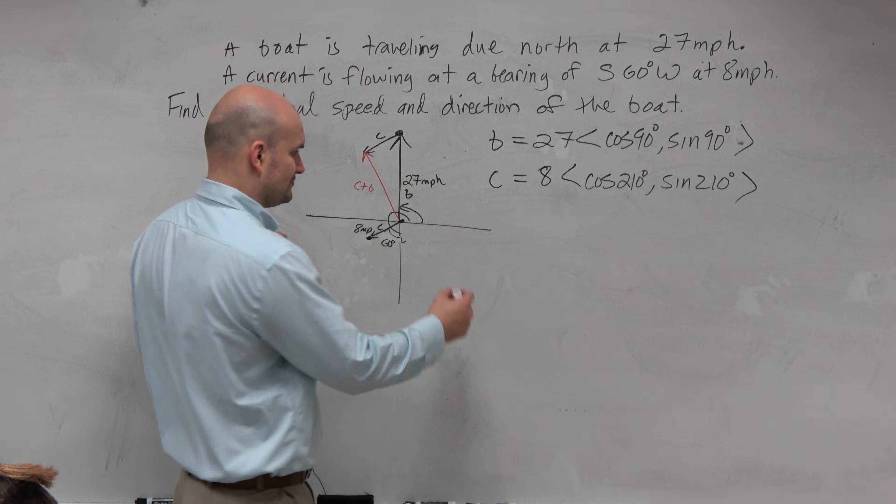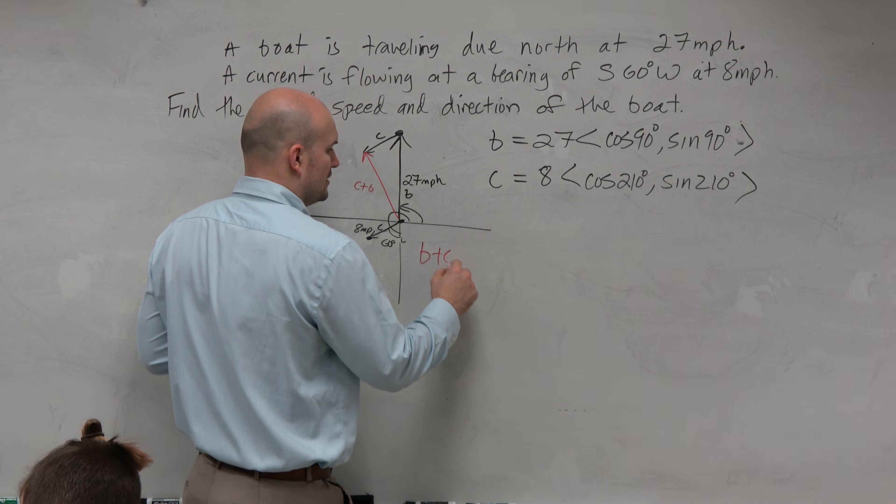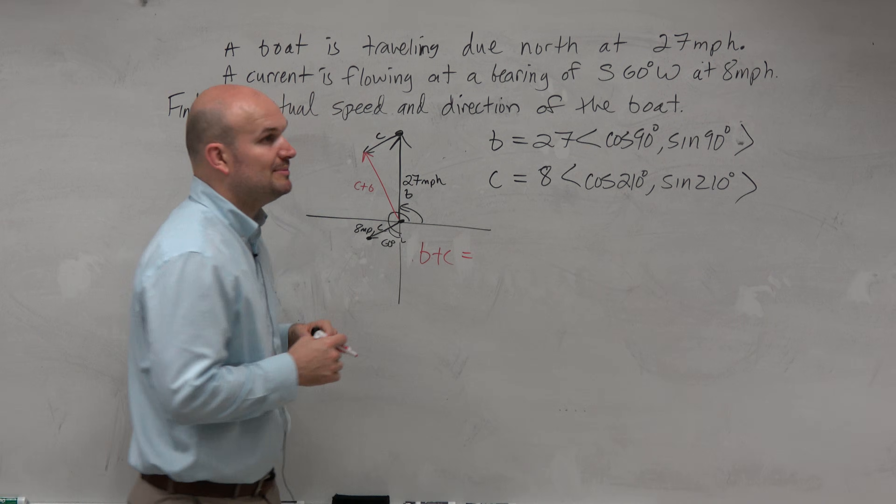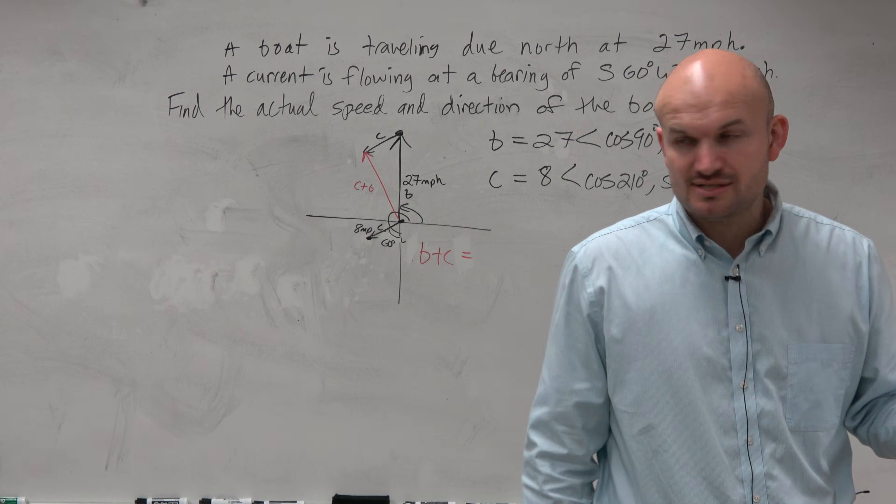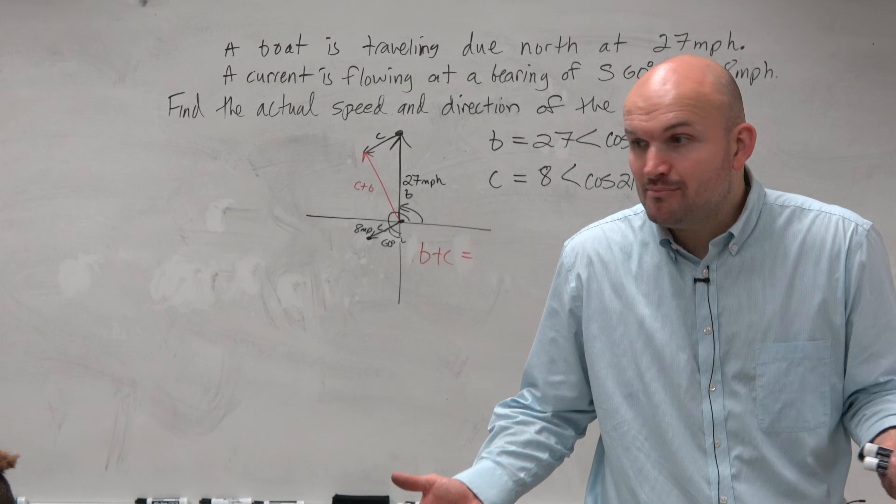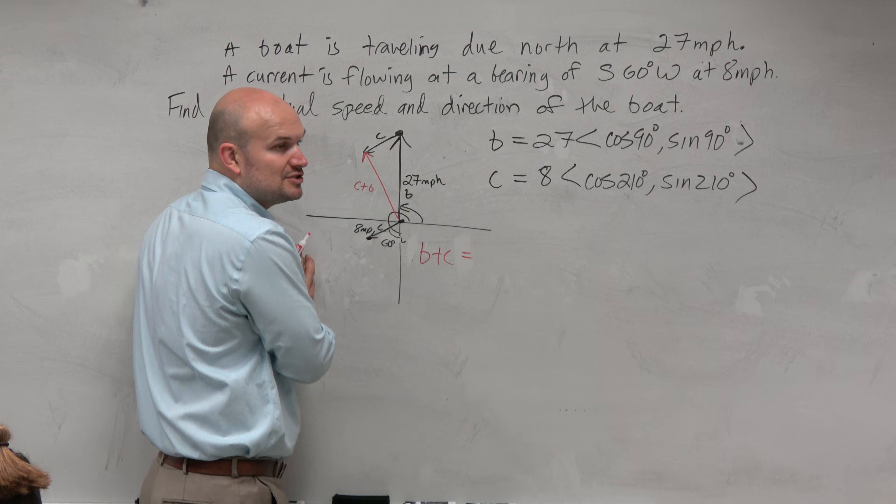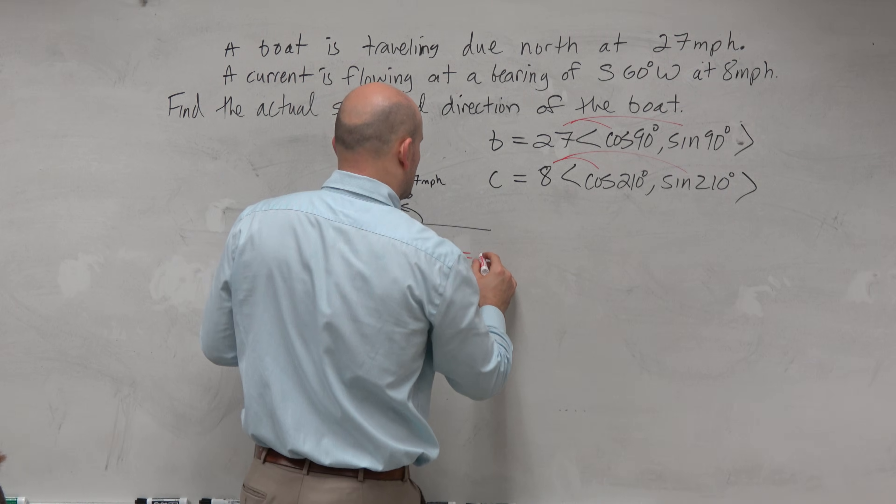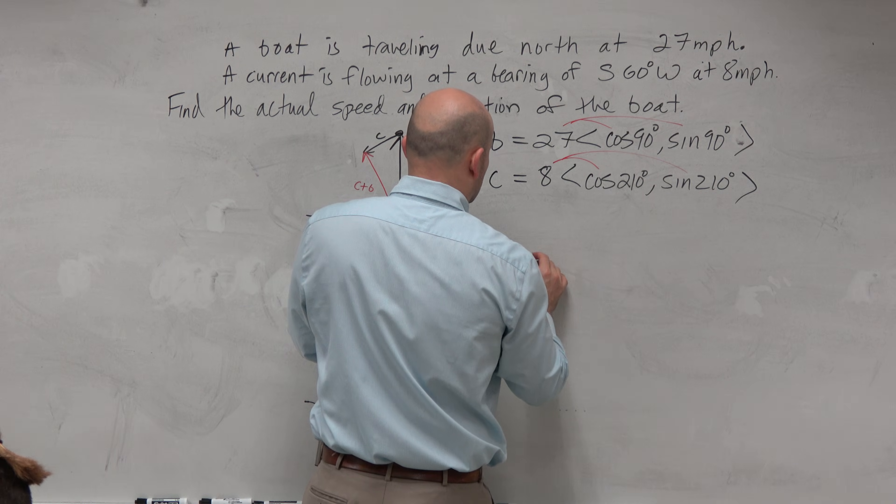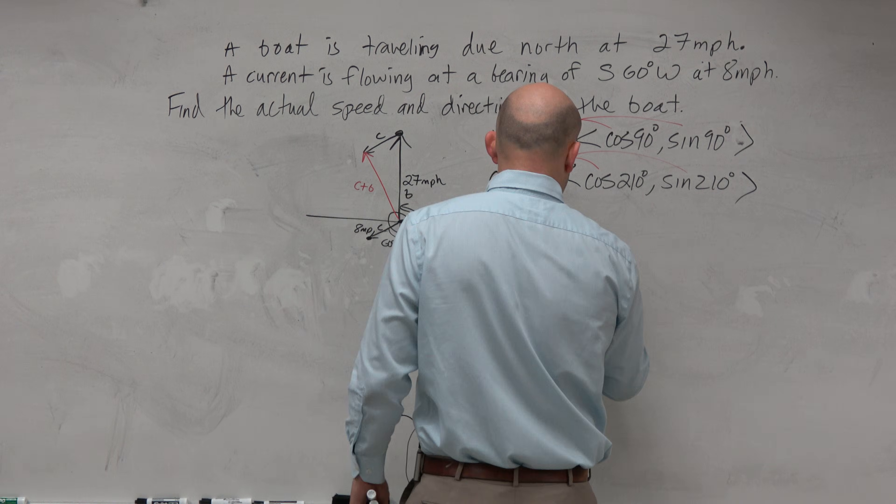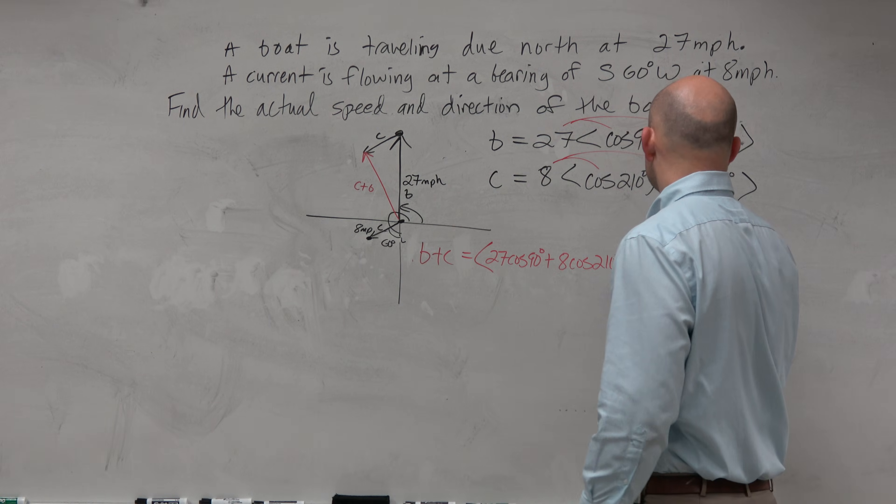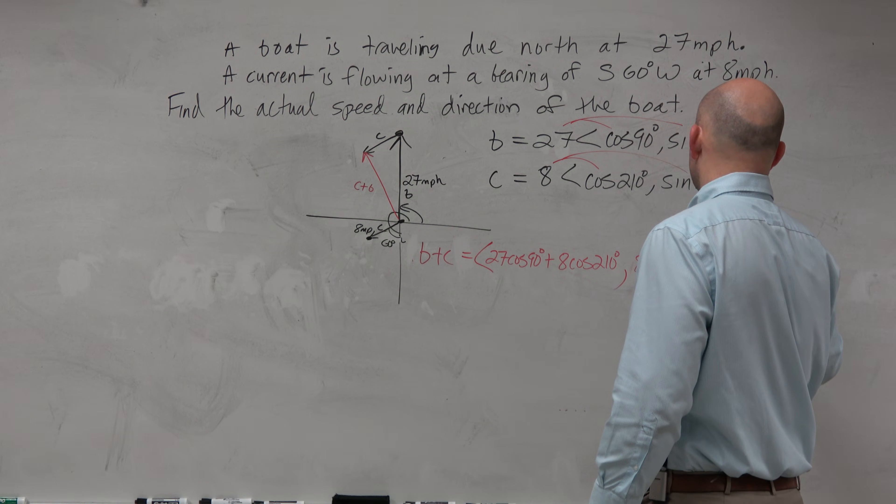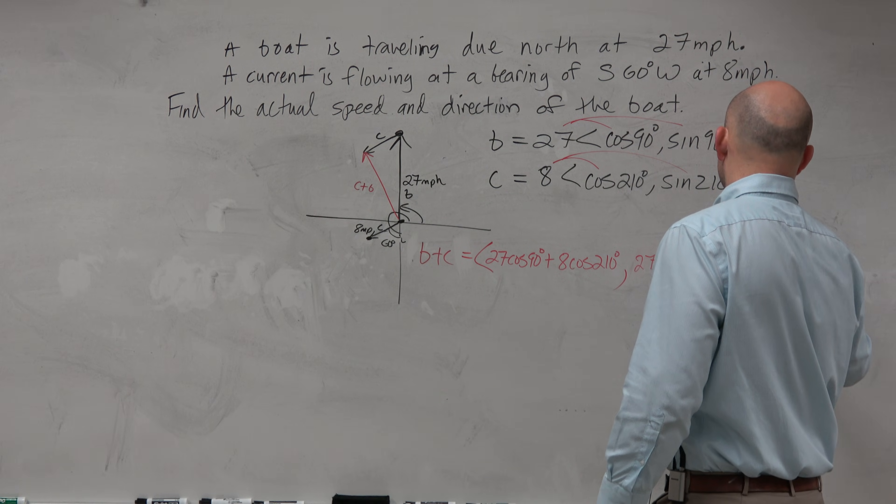So then how do we find the magnitude of b plus c? Well, we could type this all into our calculator, one by one. I am going to actually, I'm going to write out, I'm just going to write it all out so we can do it in our calculator. So let's do b plus c. Now again, how do we add two vectors? How do we add two vectors? Just add their components. Add the first two components, add the second two components. So it might be easier, well it will be easier, to distribute your scalar. So therefore, the sum here is going to be 27 cosine of 90 degrees plus 8 cosine of 210 degrees, comma 27 sine of 90 degrees plus 8 sine of 210 degrees.